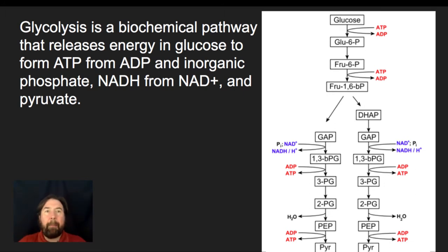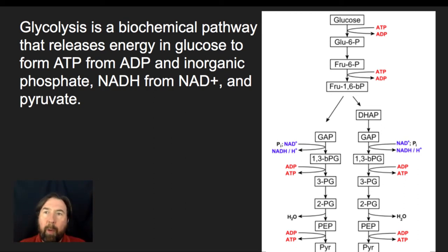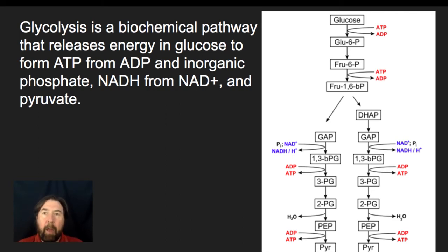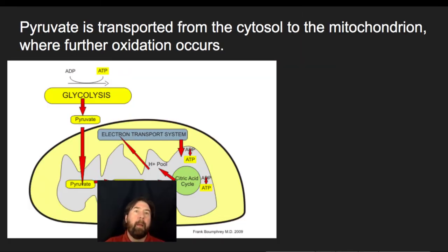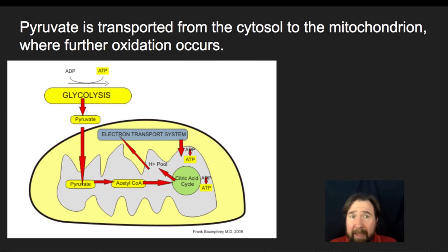Glycolysis is the biochemical pathway that releases energy from glucose to form ATP from ADP and inorganic phosphate, also producing NADH from NAD+ and pyruvate. You could also have a fructose molecule or other molecules come in to produce pyruvates. As long as you go through the process to make pyruvates, you will have the raw materials to form acetyl-CoA and enter the Krebs cycle. Pyruvate is the transport molecule from the cytosol to the mitochondria where further oxidation occurs, and it is converted into acetyl-CoA that enters the citric acid cycle.